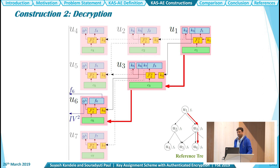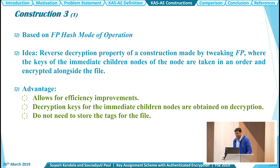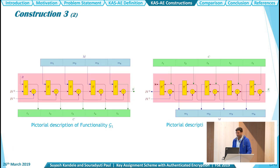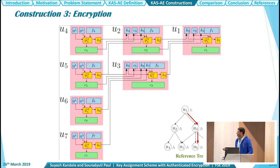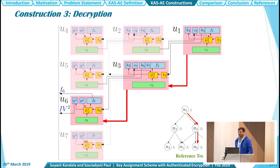Construction 3 is based on the FB hash mode of operation, where the idea is exactly the same. It offers similar advantages. The functionalities G1 and G2 are used in the encryption, G2 in the key derivation, and G2 in the decryption algorithm.